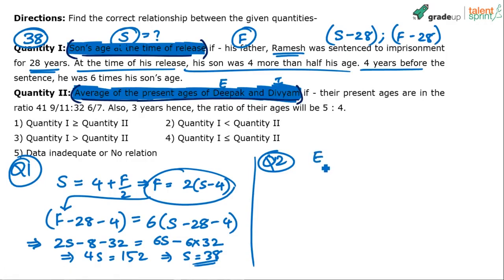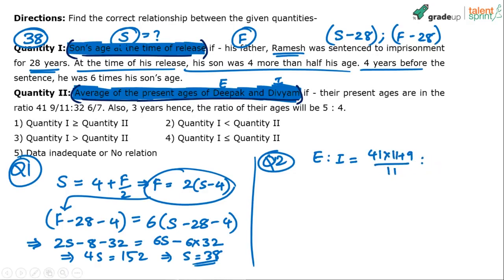E to I equals 41 and 9/11 to 32 and 6/7. Simplifying mixed fractions to improper fractions: 41 times 11 plus 9 all over 11, to 32 times 7 plus 6 all over 7. That gives 451 plus 9 over 11 to 224 plus 6 over 7, which is 460/11 to 230/7.